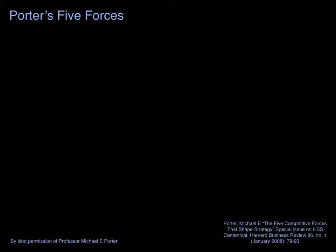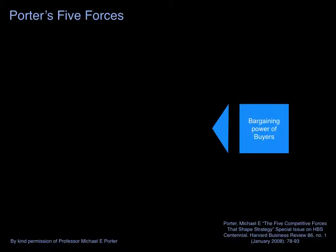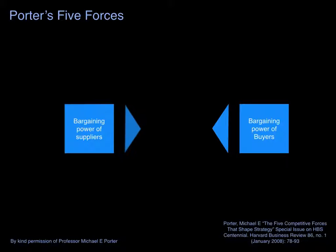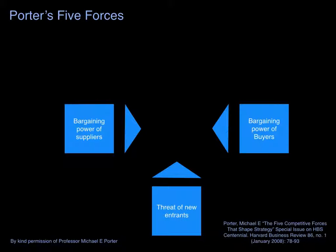These are the five forces. The bargaining power of buyers — do the buyers have the power to drive down the industry sales prices? The bargaining power of suppliers — do suppliers have the power to drive up the cost of purchases made by the industry? The threat of new entrants — how easy is it for newcomers to enter the market and then drive down sales prices by adding to competitive pressures in the industry?